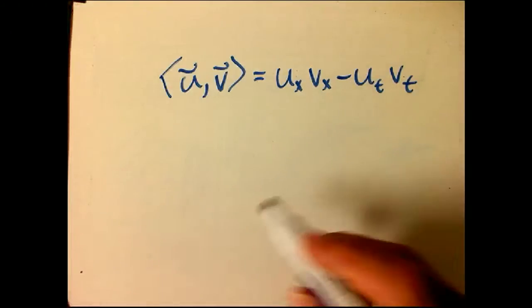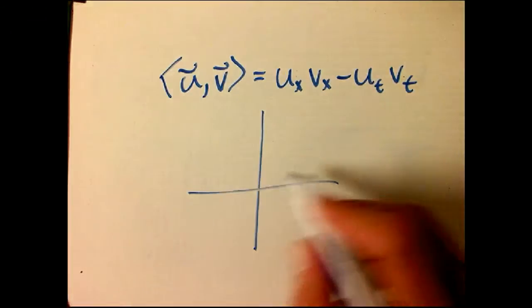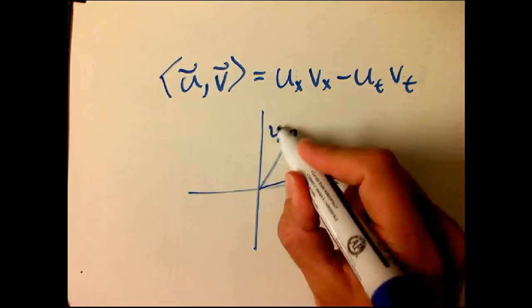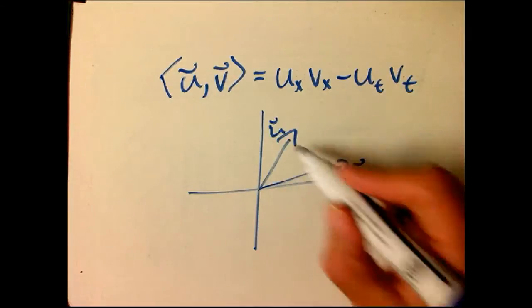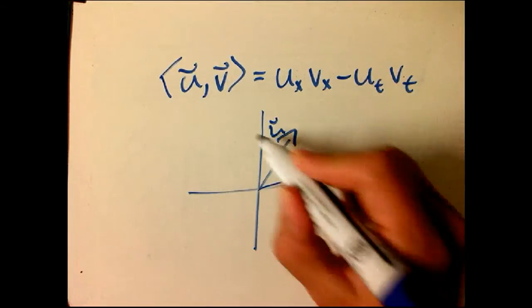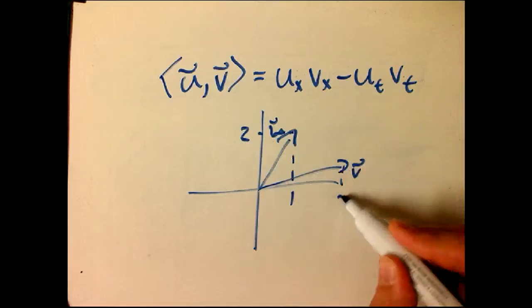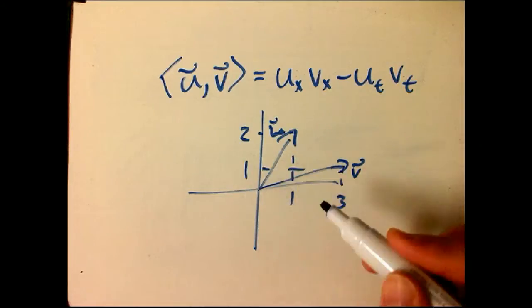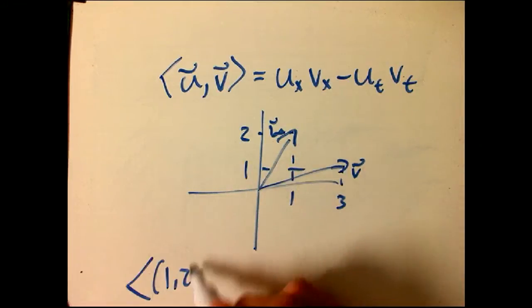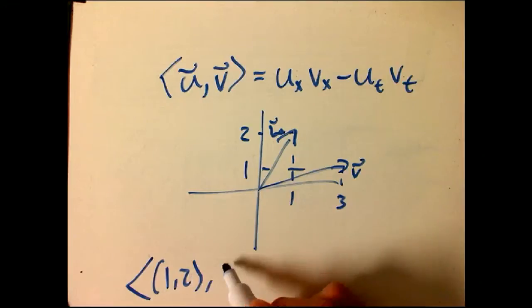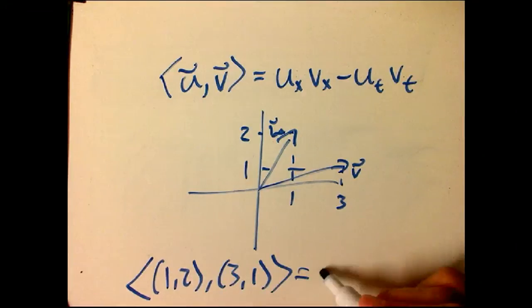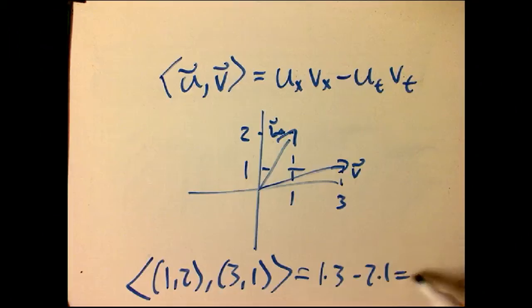So if I have two vectors in Minkowski space, u and v, say that's (1,2) and this is (3,1), then (1,2) in a scalar product with (3,1) is going to be 1 times 3 minus 2 times 1, which happens to be plus 1. And that minus, it just makes all the difference.